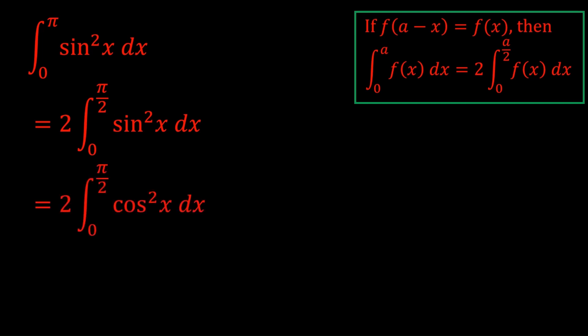We have two forms of the same integral, you add them together and divide by 2. And well, sin²x + cos²x is just 1. So it simplifies so nicely, and the answer is π/2.